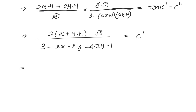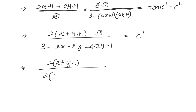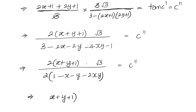Now in the denominator we take 2 common, so the 2's cancel. We get 2(x + y + 1) · √3 divided by √3 divided by 2(1 − x − y − 2xy) equals c″. Writing c″/√3 as another constant A, we get our desired answer: x + y + 1 equals A · (1 − x − y − 2xy).